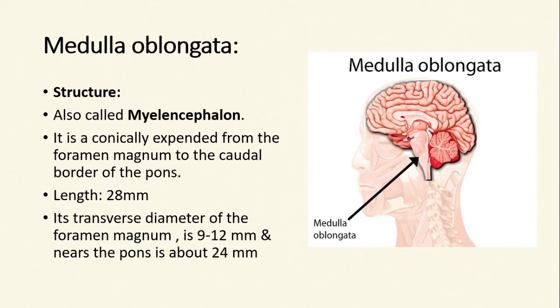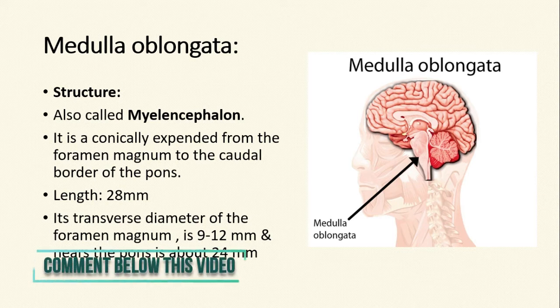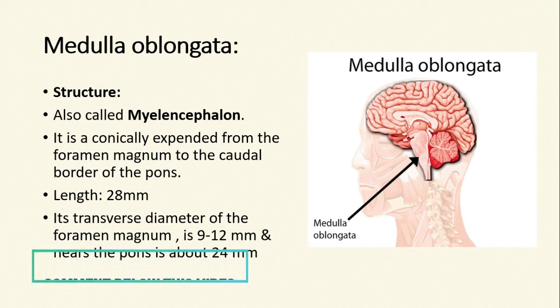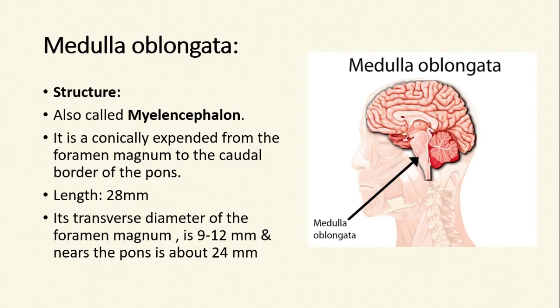The medulla oblongata is also known as myelencephalon. Structurally, it is conically extended from the foramen magnum to the caudal border of the pons. It is approximately 28 mm in length. Its transverse diameter at the foramen magnum is 9 to 12 mm, and near the pons it is about 24 mm.